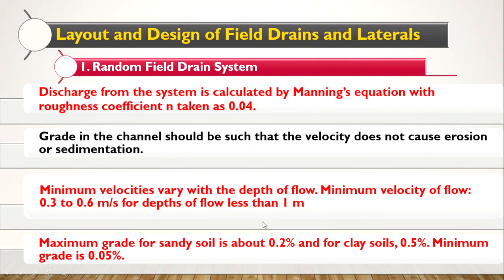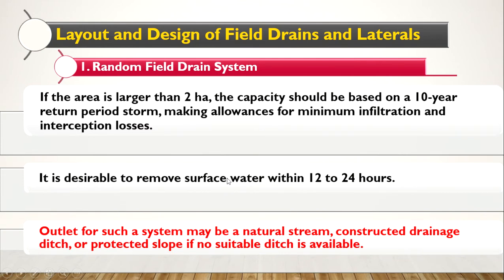Manning's equation uses a roughness coefficient of 0.04. It is desirable to remove surface water within 12 to 24 hours; otherwise the water will infiltrate into the soil, causing subsurface waterlogging. To avoid that situation, surface water must be removed within 12 to 24 hours. The outlet of such a system may be a natural stream, a constructed drainage ditch, or a protected slope if no suitable ditch is available.